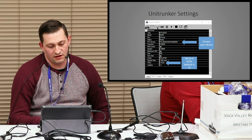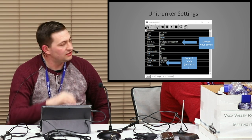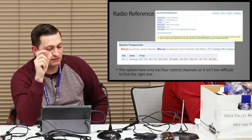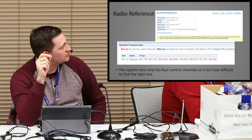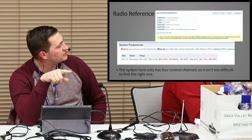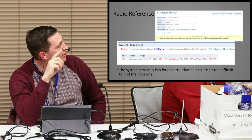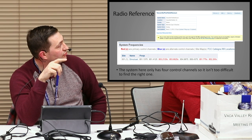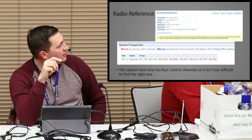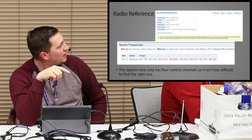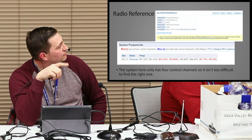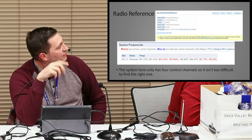Next you've got to figure out what your control frequencies are for the trunked system you're trying to listen to. If you go to radioreference.com, go to California, Solano County, or wherever you're at, you can find the system that says trunked. This one is a trunked system and lists all the frequencies they use. However, you really only need to put in one that works. The primary one is marked in red — so the first one we'd try is 853.2125, and that's the control channel.